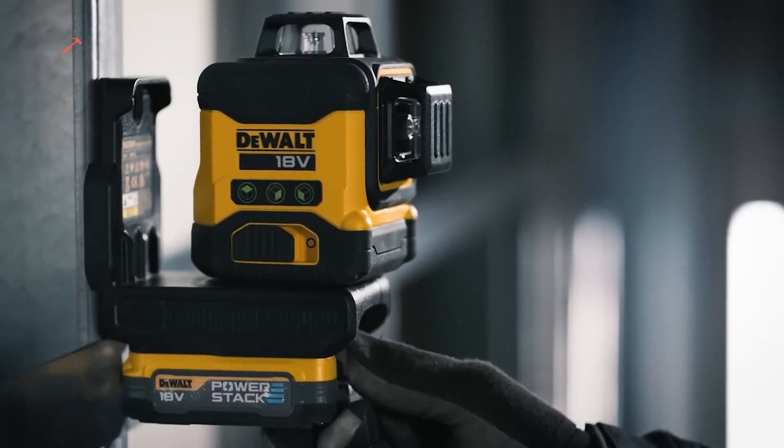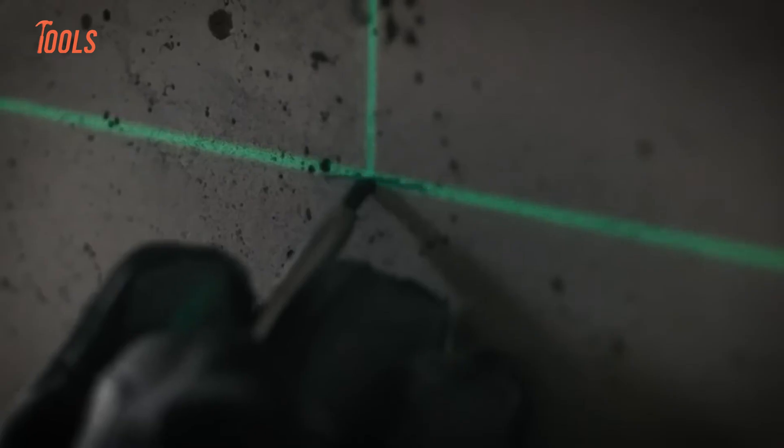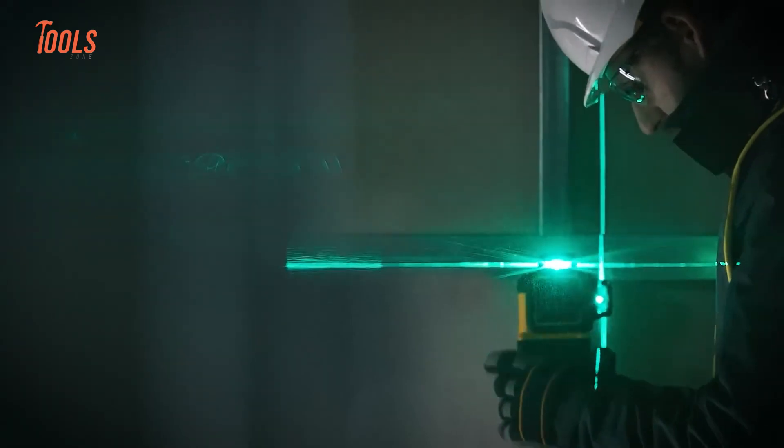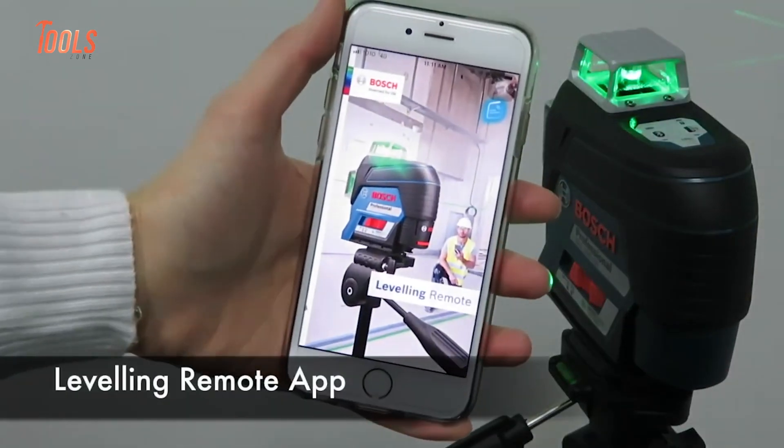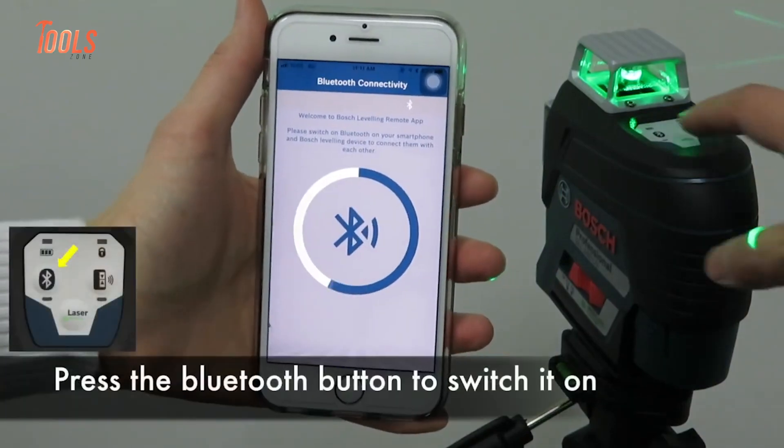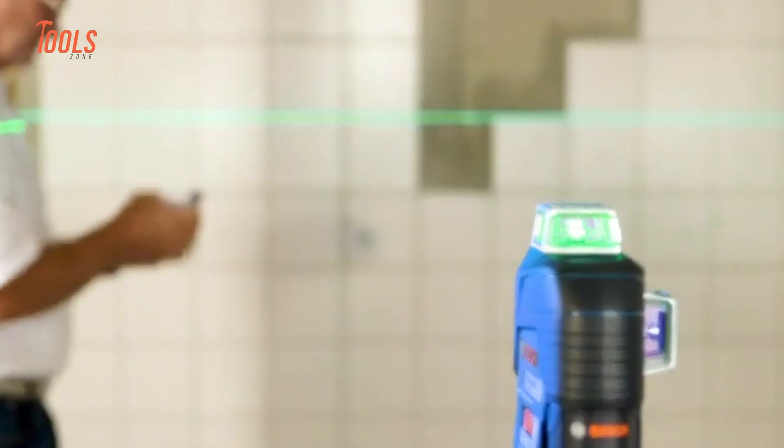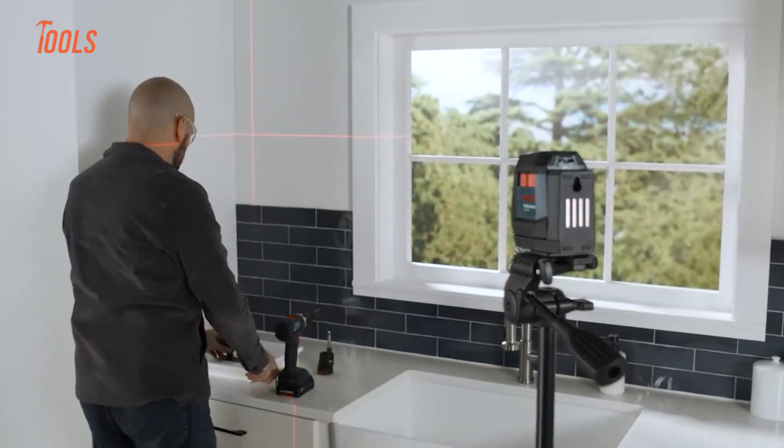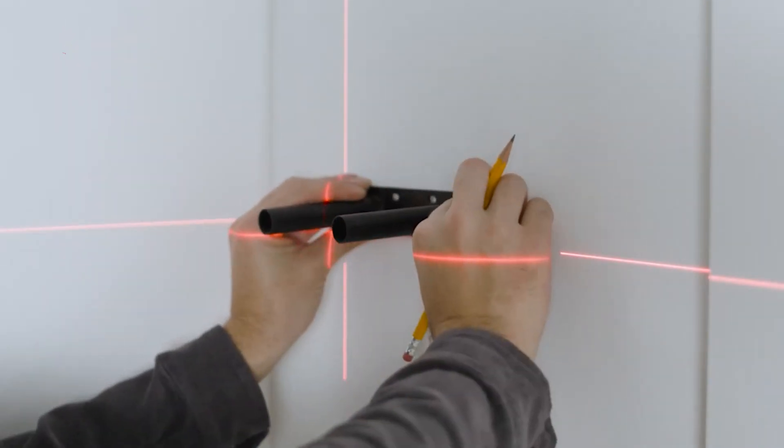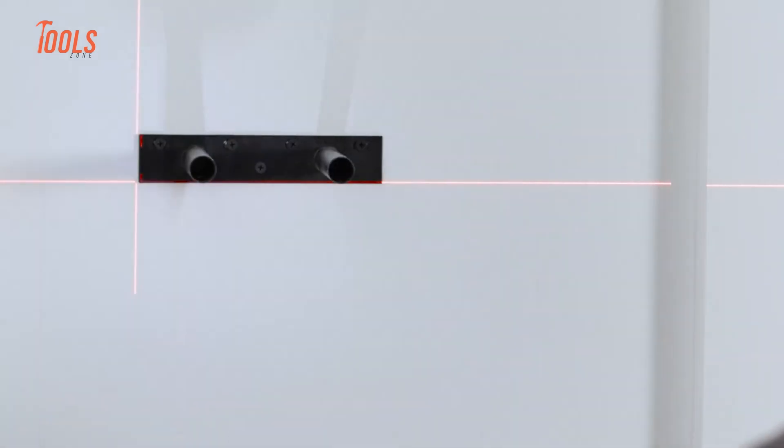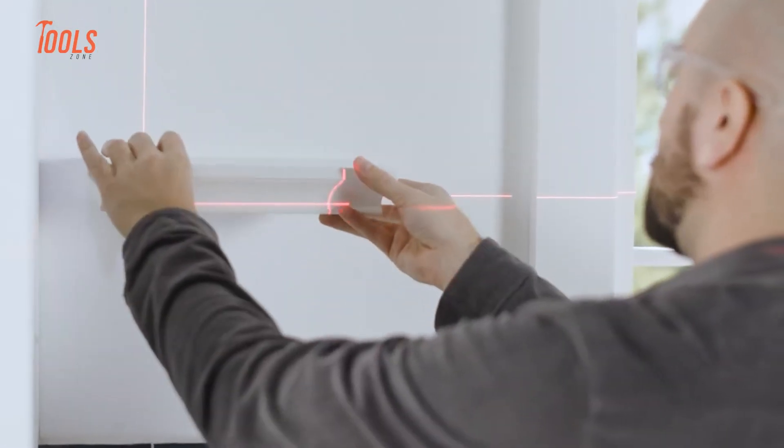Modern high-end laser levels are not just more accurate and durable, they're also smarter. Some premium models now include Bluetooth connectivity, allowing you to control settings or check battery status through a mobile app. Others offer multiple laser planes, including 3D coverage, which means they can project horizontal and vertical lines all around a room simultaneously.